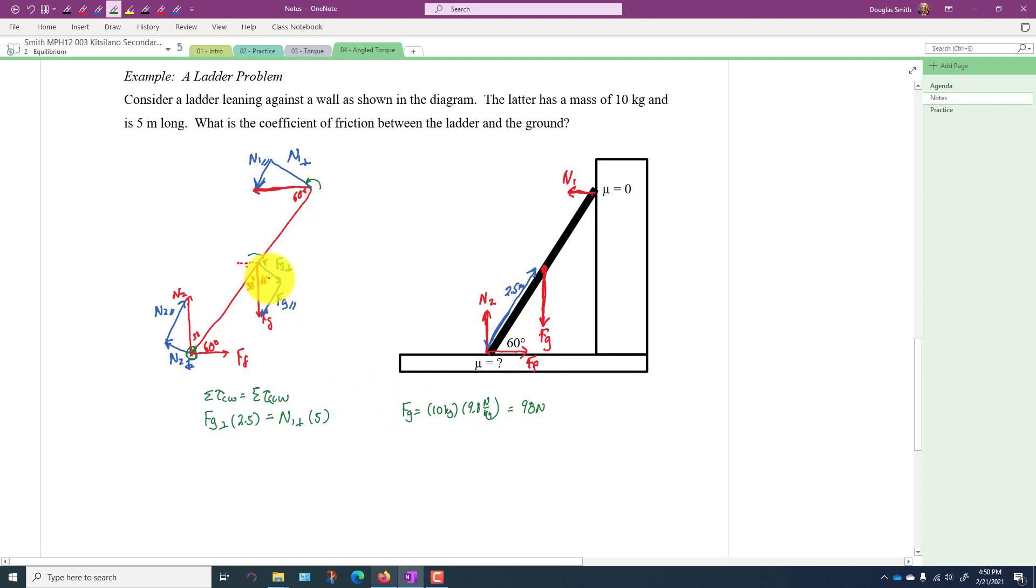And then we can use some trig here. Fg perpendicular is equal to Fg times cos 60 degrees. Cos 60 I'm pretty sure that's a half actually, so this is going to be 49 newtons. So we can calculate N1 perpendicular. N1 perpendicular is equal to Fg which is 49 times 2.5 divided by 5, so it's half of 49 again.